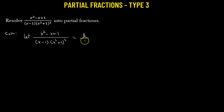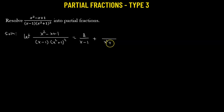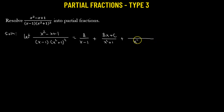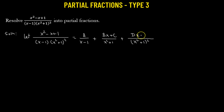The first partial fraction will have the form a over x minus 1. The next will have denominator x squared plus 1, and since it's a quadratic factor, its numerator is going to be bx plus c. Then we'll have one more partial fraction whose denominator is x squared plus 1 repeated twice, also a quadratic factor, so its numerator will be of the form dx plus e.